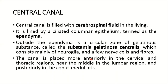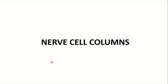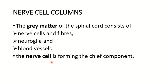The central canal is filled with cerebrospinal fluid in the living and lined by a ciliated columnar epithelium termed the ependyma. Outside the ependyma is a circular zone of gelatinous substance called the substantia gelatinosa centralis, consisting mainly of neuroglia and a few nerve cells and fibers. The gray matter consists of nerve cells, fibers, neuroglia, and blood vessels, with nerve cells forming the chief component.